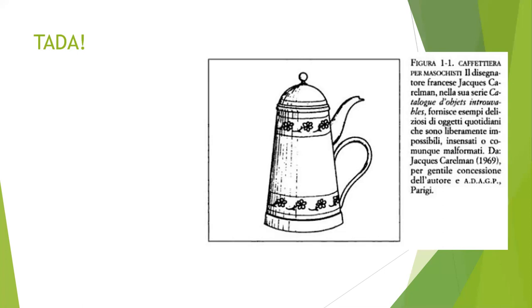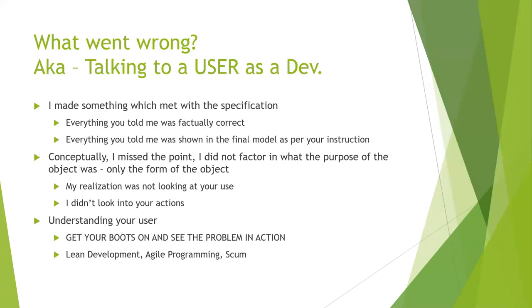You told me everything, I did everything you wanted — and then the user says, 'but that's not what I wanted.' Anyone who's worked in industry with users asking how they want a program to work has probably hit this problem. You built something beautiful, spent all your time and energy, and as soon as it was built the object was completely unusable. This met the specification — the spout, the handle, all factually correct — but conceptually, I completely missed the point of what the object was designed for.